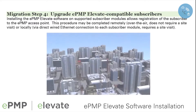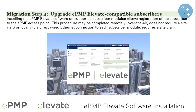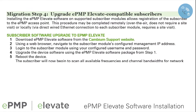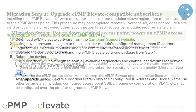Step 4 includes installation of the ePMP Elevate software onto compatible subscriber modules. Once a subscriber is upgraded, it will begin to scan for ePMP access points on all frequencies and channel sizes. Upgraded ePMP Elevate subscribers retain only their management IP address and device name. All other parameters may be configured over the air after the upgrade to ePMP Elevate.